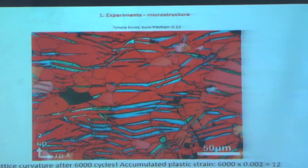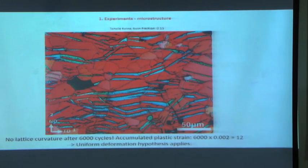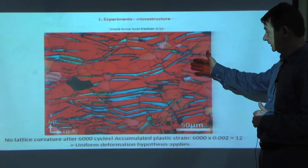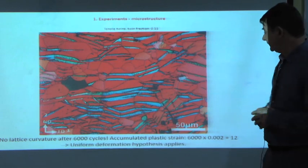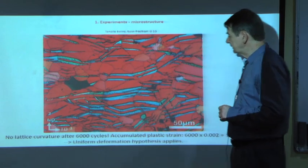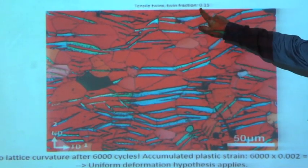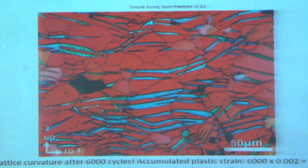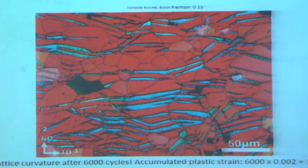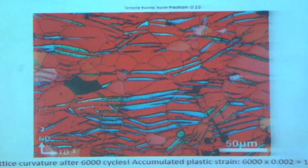The microstructure after 6000 cycles shows many red initial grains that remained and didn't change their orientation, but there are plenty of twins which appeared in many grains - almost all of them twinned. A twinning volume fraction of about 15% can be estimated from the map. The purpose of the modeling is also to reproduce this twinning - not just the 15% total, but we were much more ambitious: we wanted to reproduce the twinning one by one in each grain.